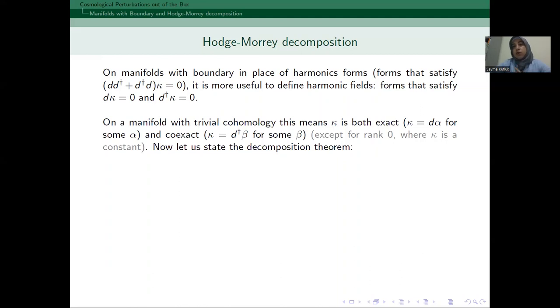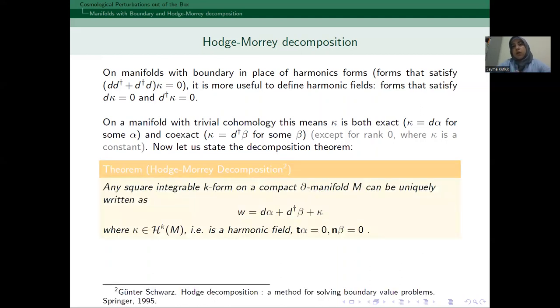Now, the Hodge-Morrey decomposition is this. Any square integrable form on our compact manifold with boundary can be decomposed uniquely as an exact part, a coexact part, and a harmonic part. And we have the following boundary conditions for the exact and coexact parts.